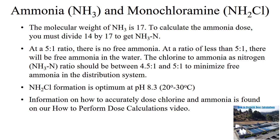At a 5-to-1 ratio, the ammonia added to the water will combine with hypochlorous acid, and the free ammonia concentration is 0. If the ratio is less than 5-to-1, there will be some free ammonia in the water. The chlorine-to-ammonia-as-nitrogen ratio should be between 4.5-to-1 and 5-to-1 to minimize free ammonia in the distribution system. Excessive free ammonia can cause nitrification and negatively affect water quality. The optimum conditions for forming monochloramine are a pH of 8.3 and a water temperature between 20 and 30 degrees Celsius. If you are interested in more information on how to calculate the proper dose and feed rates of chlorine and ammonia, please watch our How to Perform Dose Calculations video.